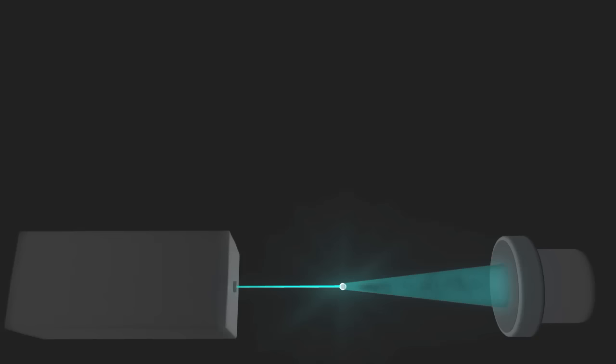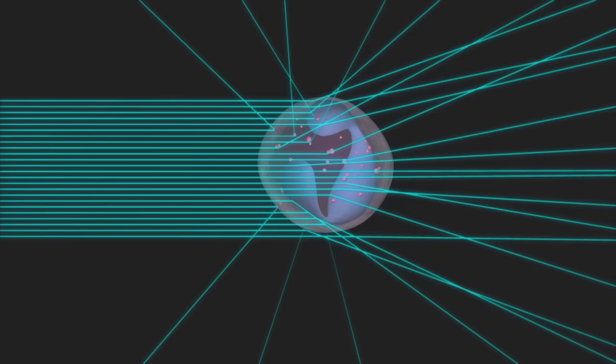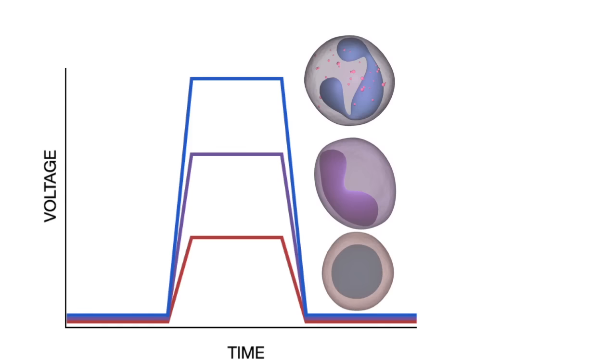The amount of side scattered light is detected by a detector located perpendicular to the path of the laser beam. Side scatter is proportional to the shape and internal complexity of a cell. Just like with forward scattered light, the flow cytometer converts the detected side scattered light into a voltage pulse, which is directly proportional to the amount of side scattered light.